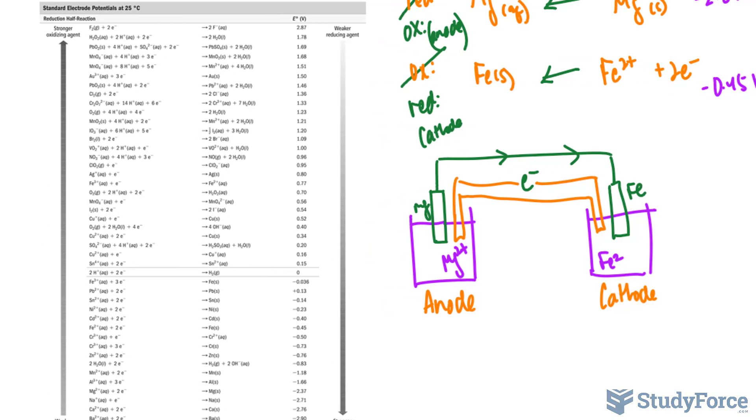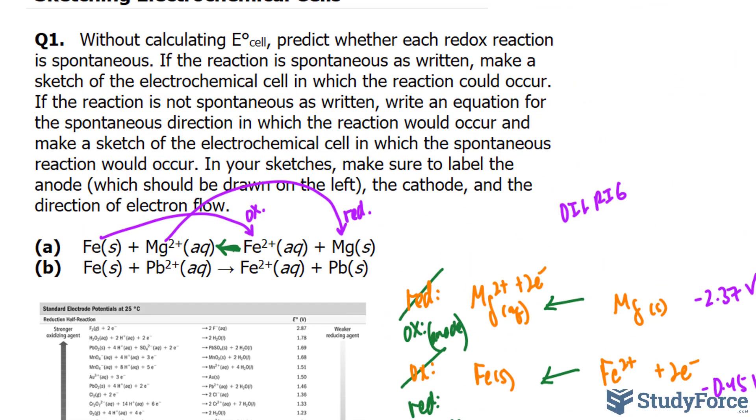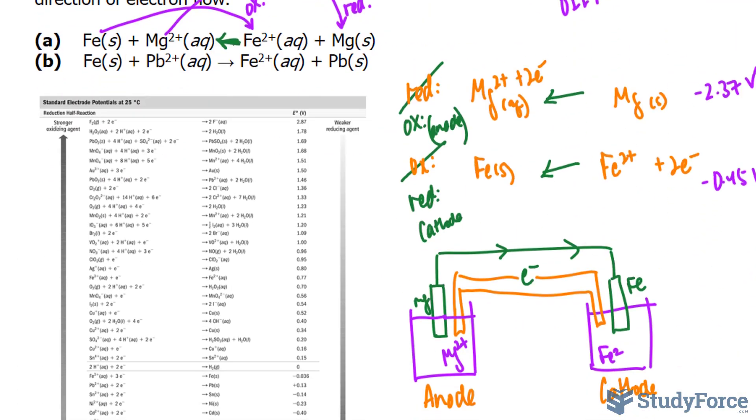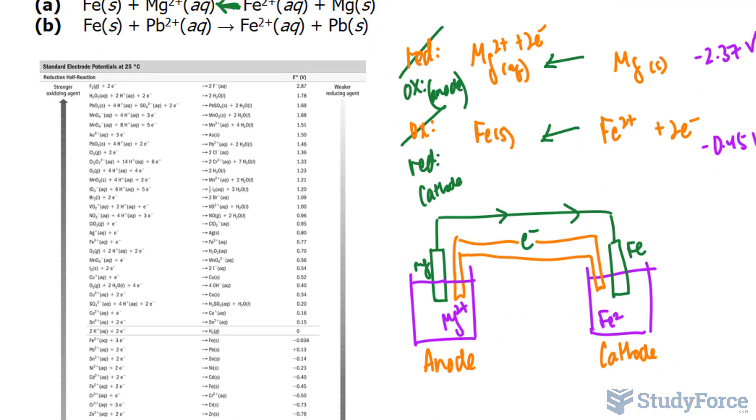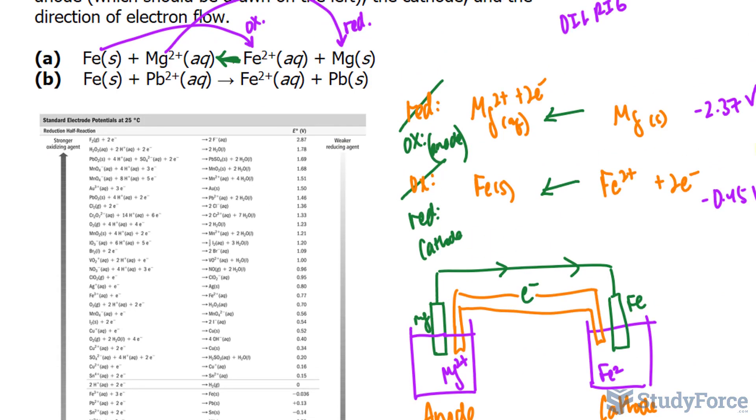So that's how you tackle these types of problems, and we're going to have to do this again for question B. Let's go ahead and do this. We need to first find out if it's spontaneous. So right from the get-go, we know that iron is losing electrons again, so that's oxidation, and this has to be reduction.